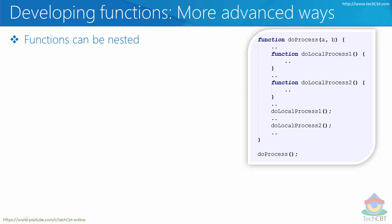The first thing is that functions can be nested. I can have a function called doProcess and call it using doProcess. This function internally has a couple more functions named doLocalProcessOne and doLocalProcessTwo. To have those two functions executed, I use two more statements inside doProcess. When I call the outer statement, it goes through doProcess, skips the function definitions, executes the call statements, which then invoke each nested function in turn.